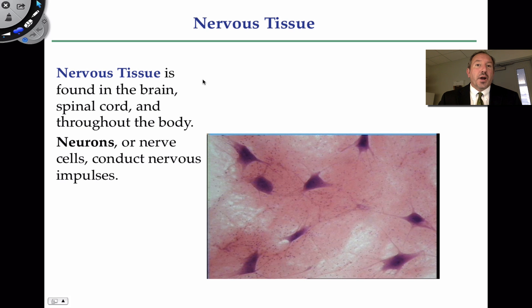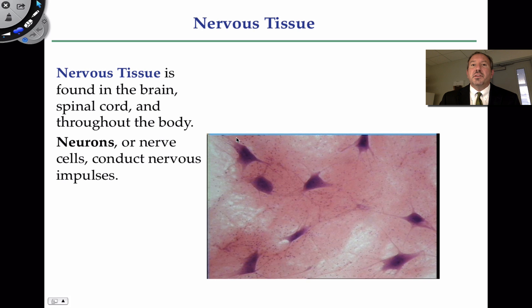The one thing I want to say right out of the gate about nervous tissue is that the cells — neurons — are able to conduct impulses. The reason they conduct an impulse is that they're capable of communication. These cells can communicate with one another, nerve to nerve, and they can also communicate with non-nervous tissue. It's the neuron that tells the muscle fiber to contract, and it's the neuron that might tell a gland to release a hormone.